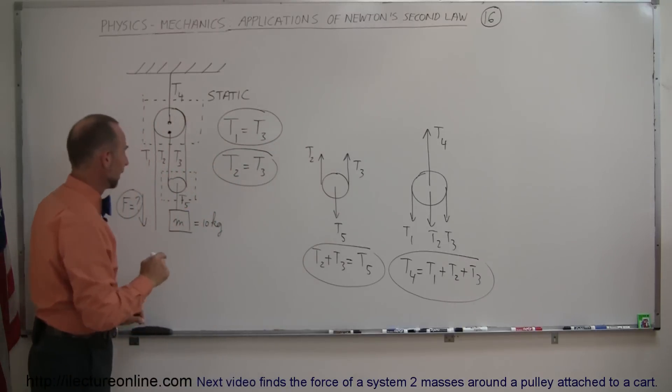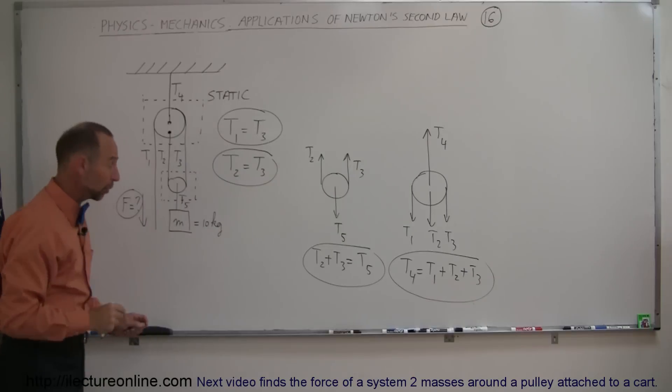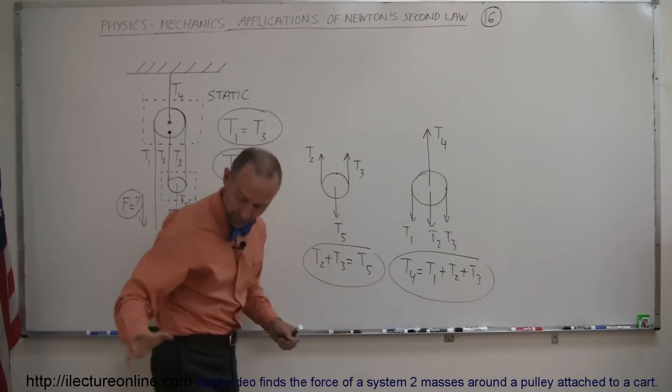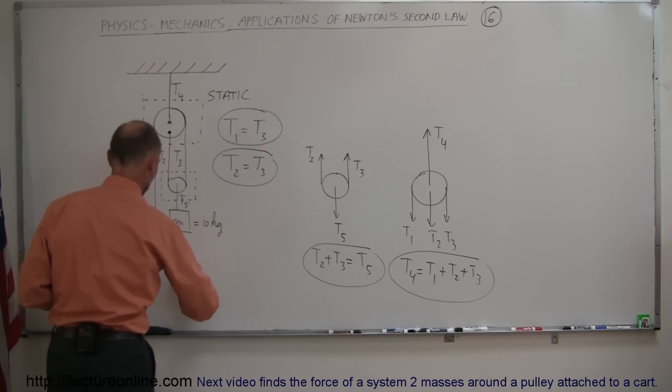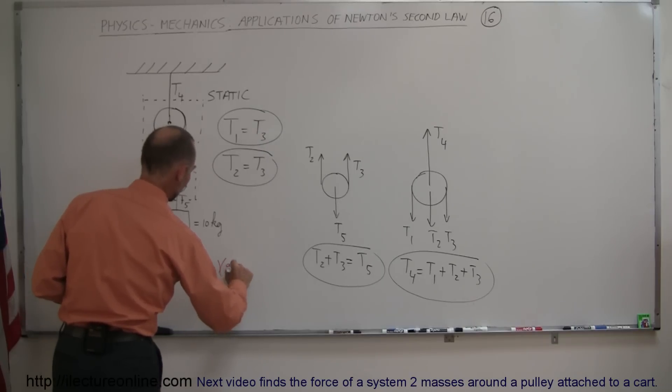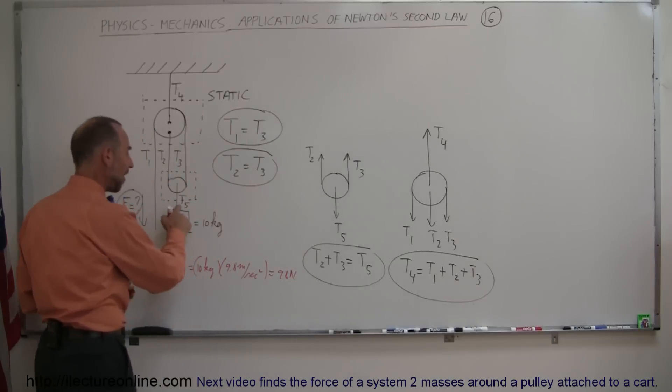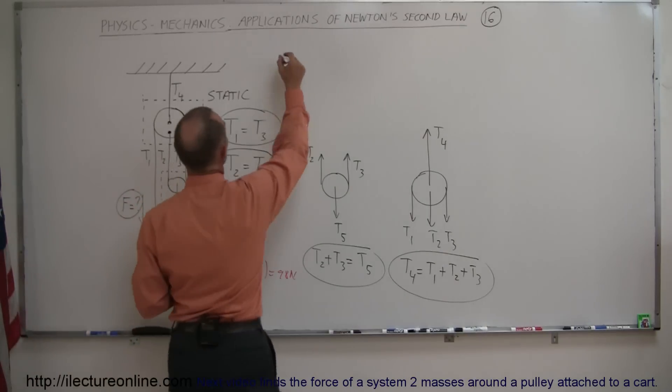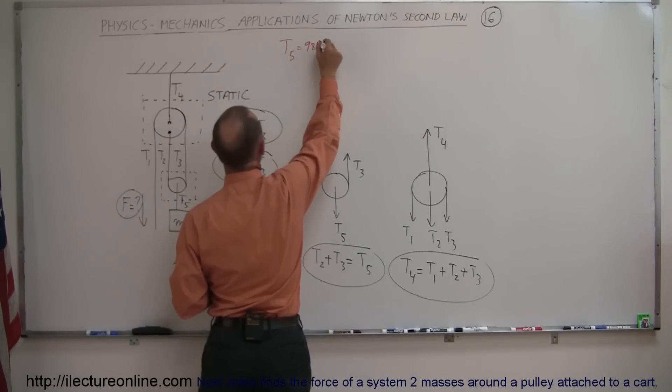So now we can say, well, T5 must equal the weight hanging from that pulley, which is the weight of that 10 kilogram mass. So this is equal to mg, which is equal to 10 kilograms times 9.8 meters per second squared, so this is equal to 98 newtons, which means that T5 must equal 98 newtons.